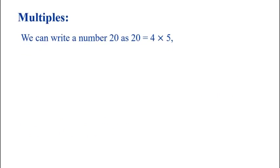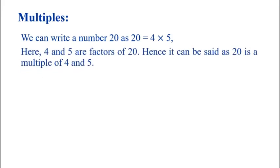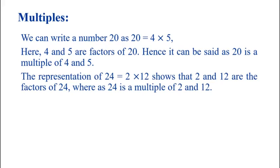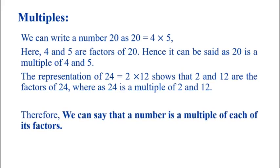Now come to multiples. We can write the number 20 as 20 = 4×5. Here, 4 and 5 are factors of 20. Hence, it can be said that 20 is a multiple of 4 and 5. The representation 24 = 2×12 shows that 2 and 12 are factors of 24, whereas 24 is a multiple of 2 and 12. Therefore, we can say that a number is a multiple of each of its factors.